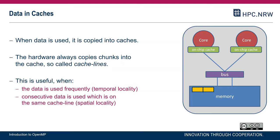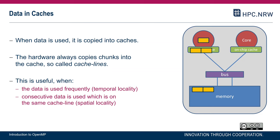Similarly, caches exploit spatial locality. If y is an array and we load y[0], because of the cache line we also get y[1], y[2], y[3], and so forth loaded into the processor's cache. If we need those neighboring elements too, we only issue one load to update eight variables, paying the overhead of loading from memory only once. This is why caches are organized in cache lines.